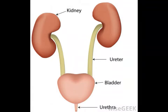The collecting ducts are a series of small tubes inside the kidneys that funnel urine into the renal pelvis for drainage into the ureter. Once in the ureter, the urine can be pushed into the bladder for elimination.